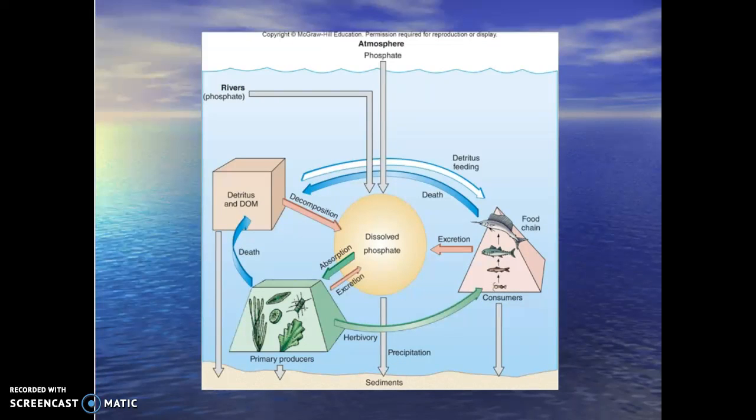And then phosphates. Normally, phosphates come in through the atmosphere. Atmospheric phosphates come in, get dissolved, get absorbed. Herbivory consumers circle through our food chain. But back to the same problem - when we have runoff rivers carrying this stuff in, now we have this extra amount of phosphates, explosion of primary producers, and we're back to our red tide issue again.